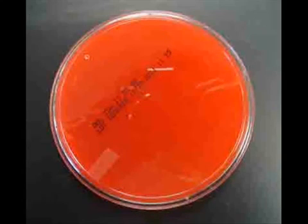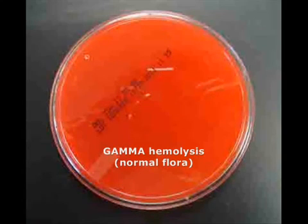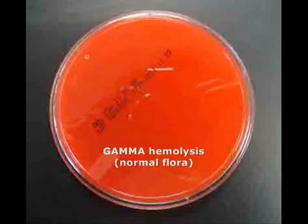Here's the bottom of a blood agar plate. Although there was growth on the top portion, when I flip that plate over and look at the underside, I can see that the medium has not changed at all. It looks as if it were a brand new plate of blood agar. This means the bacteria growing there do not produce hemolytic enzymes, so this is gamma hemolysis, indicating normal flora.